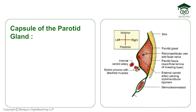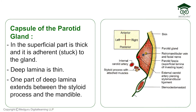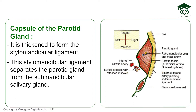The capsule of the parotid gland is made by the investing layer of the deep cervical fascia. This fascia splits into two parts: one superficial part and one deep part. The superficial part is thick and adherent to the gland. The deep lamina is thin, and one part of it extends between the styloid process and the mandible, thickening to form the stylomandibular ligament, which separates the parotid gland from the submandibular gland.